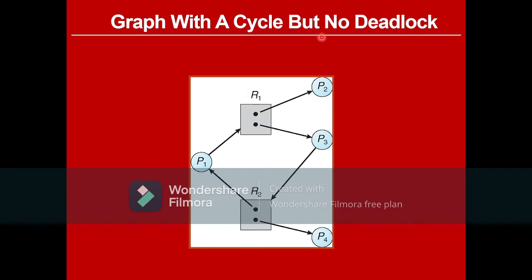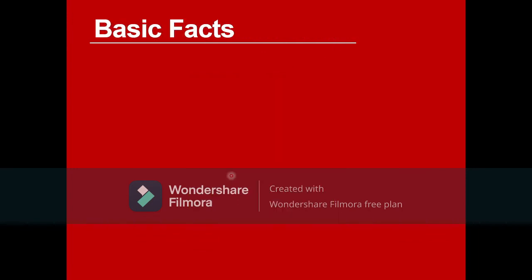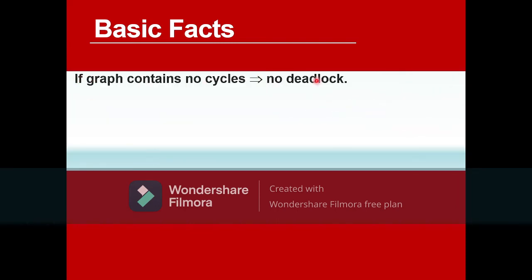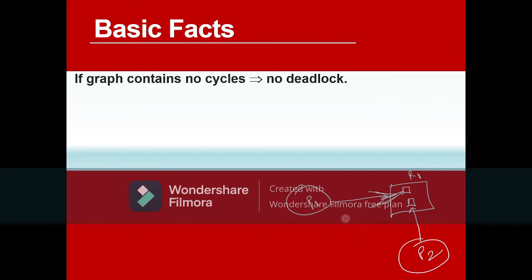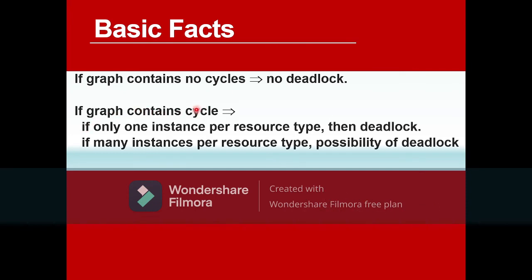There is a cycle, but it is not guaranteed that there will be a deadlock — a graph with a cycle need not have a deadlock. So the basic facts are: if the graph contains no cycle, there is no deadlock — 100% no deadlock. For example, if there is no cycle in the graph, you can call it with certainty a no-deadlock situation. If a graph contains a cycle and there is only one instance per resource type, then there is definitely a deadlock.